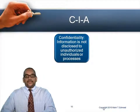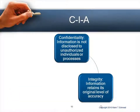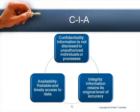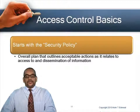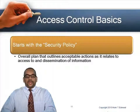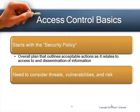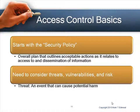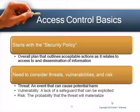We need to remember the concept of CIA — confidentiality (ensuring information is not disclosed to unauthorized individuals or processes), integrity (information retains its original accuracy and hasn't changed), and availability (data is available in a timely manner). Access control basics begin with the security policy, which defines acceptable actions relating to access and dissemination of information. We also consider threats (events that can cause harm), vulnerabilities (weaknesses that can be exploited), and risk (the probability that a threat can actually happen).